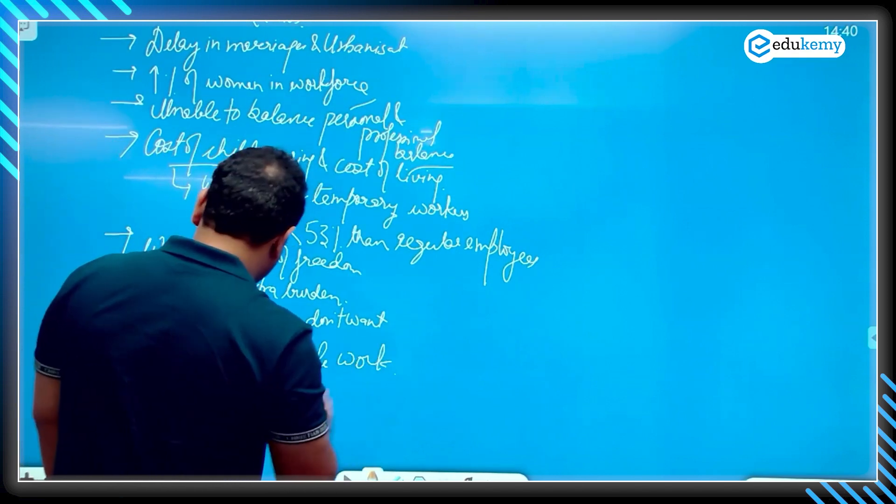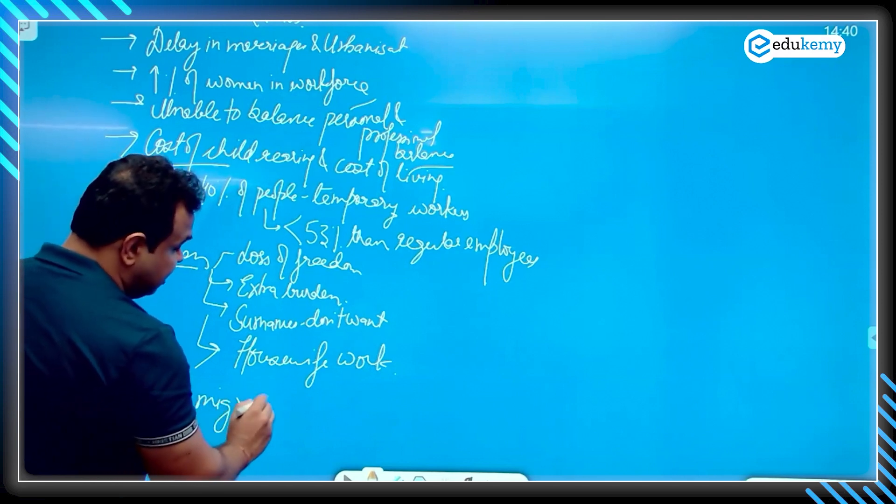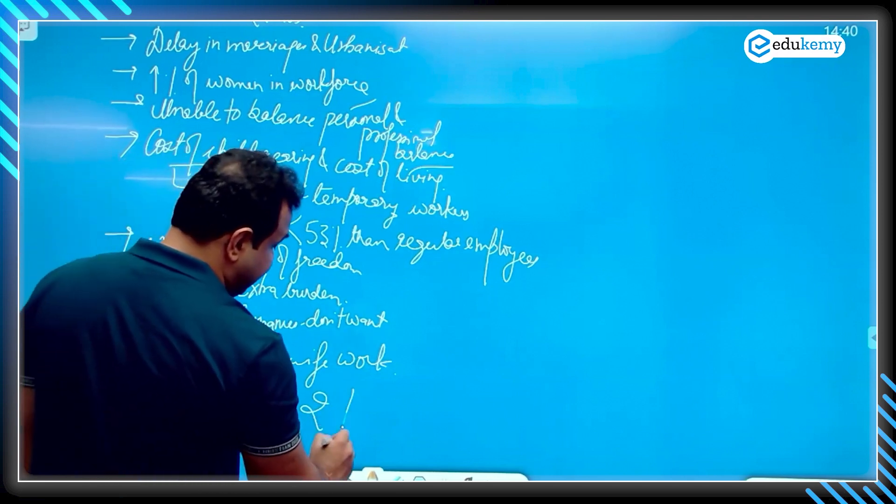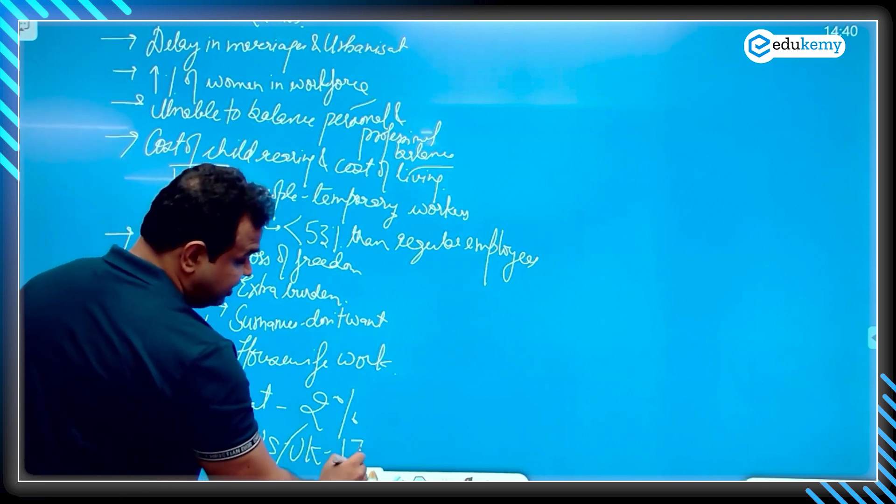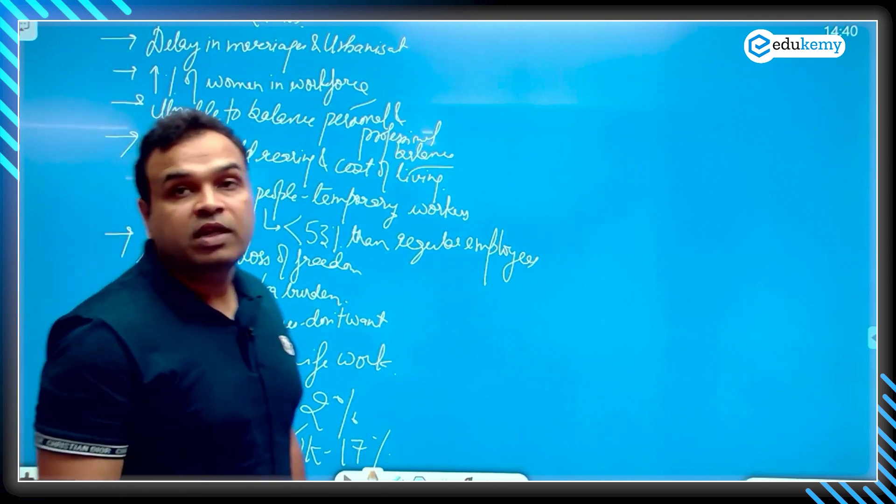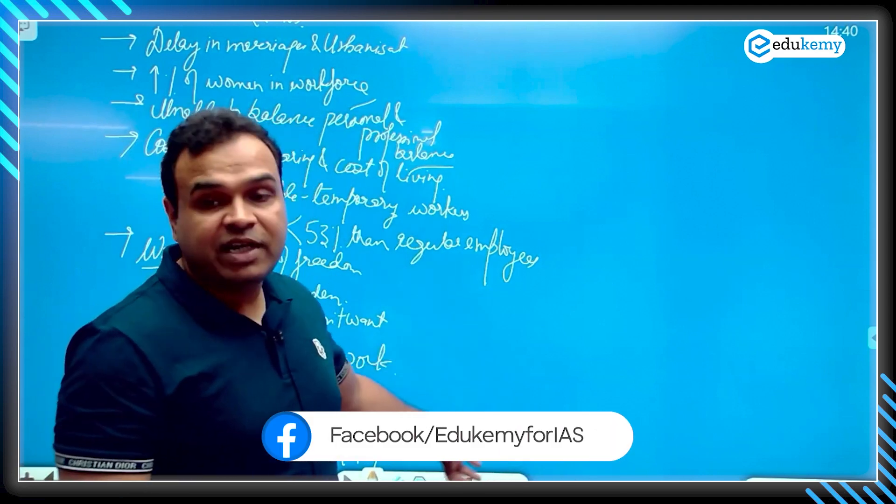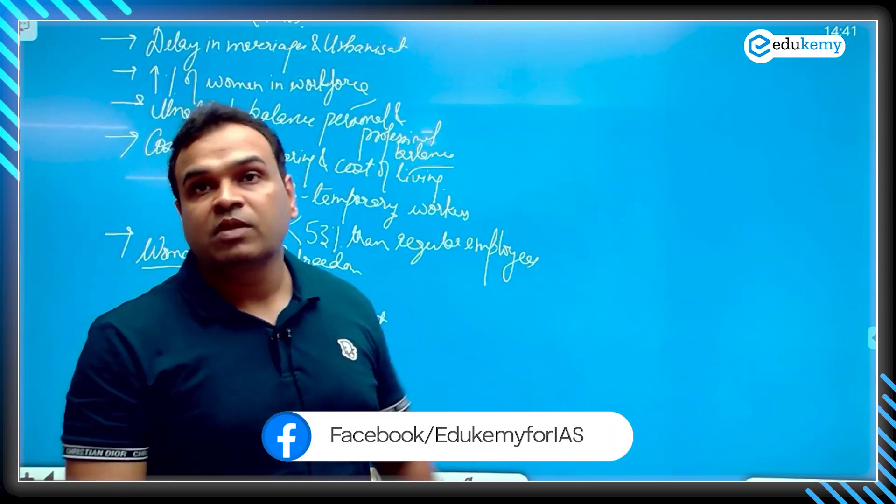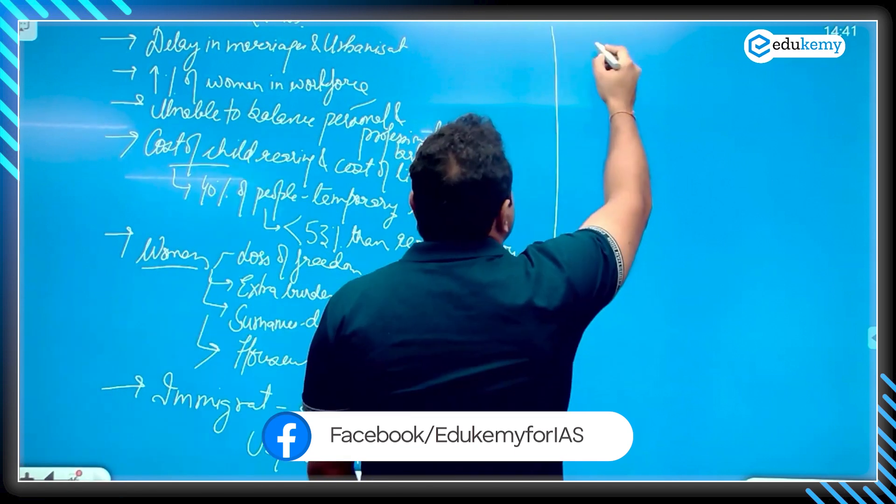Another is immigration. The immigration in Japan is only 2%, while if you compare it with the US and UK, there you will see 17% immigration. So immigration is showing a stark difference.